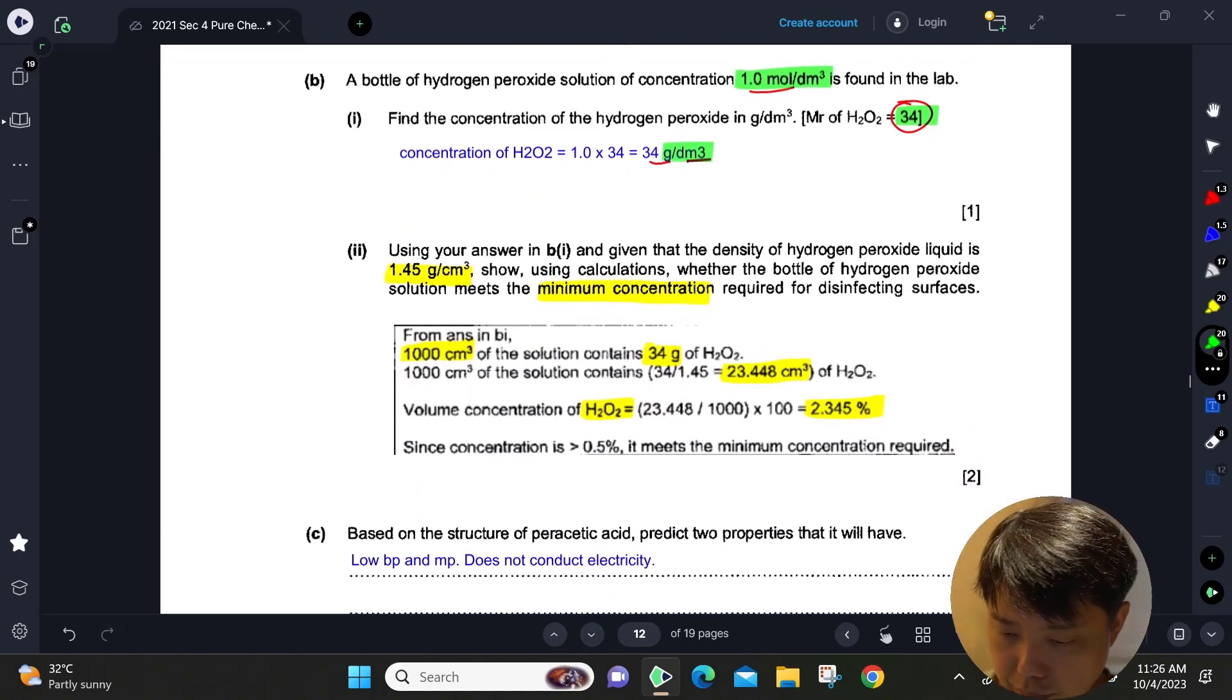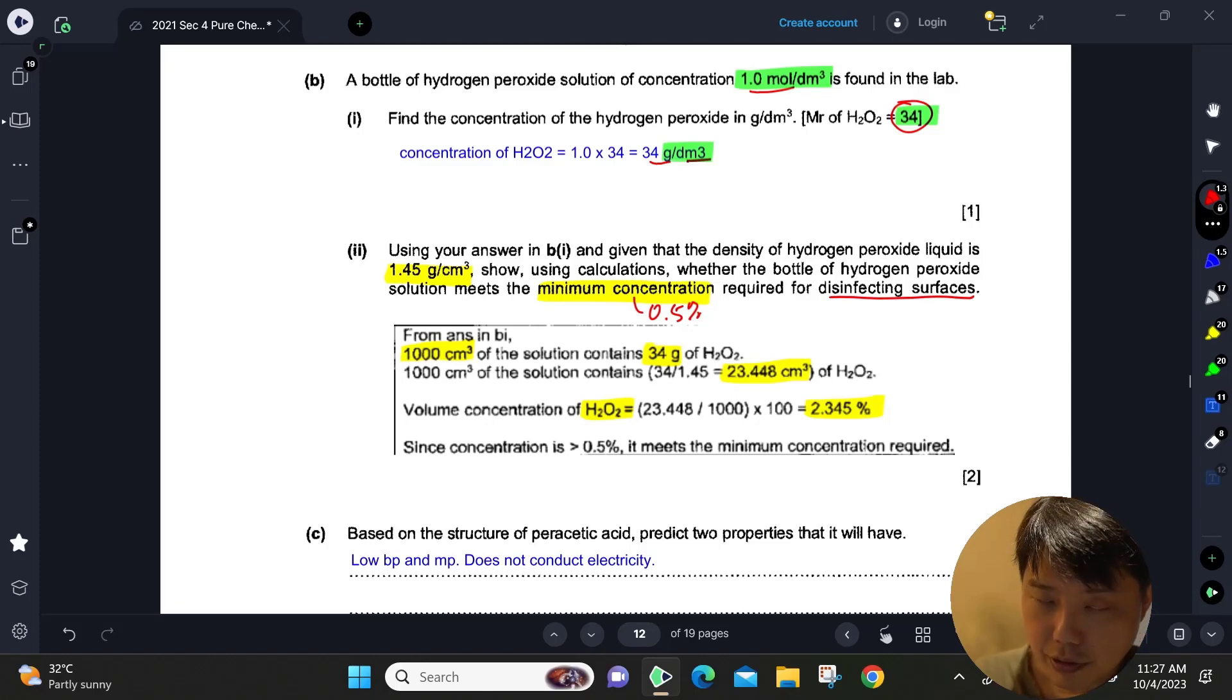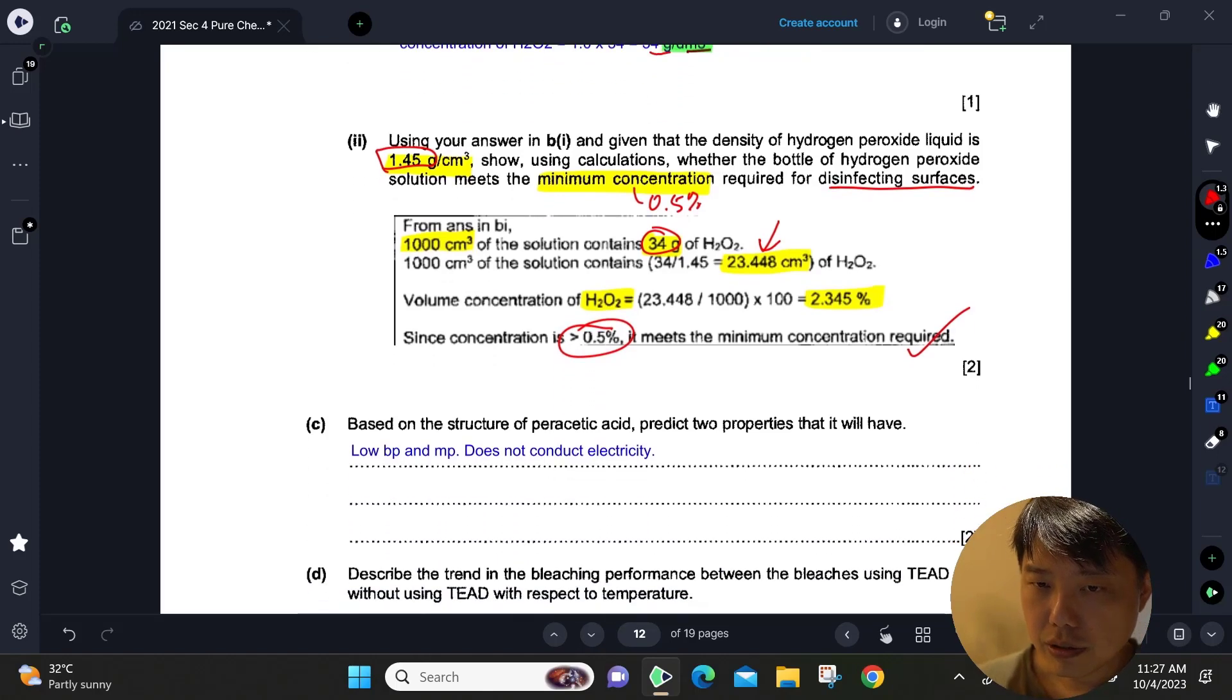Part 2: using your answer in B part 1 and given that density is 1.45 grams per cm³, show using calculation whether or not this bottle of peroxide meets the minimum concentration, which is 0.5 percent peroxide required for disinfecting surfaces. We know from B part 1 that 1 dm³ has 34 grams. We're going to use the density to help us convert to volume in cm³. If 1 dm³ has 23.4 cm³, that is about 2.34 percent, which is greater than 0.5 percent, so yes, it meets the minimum requirement.